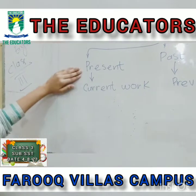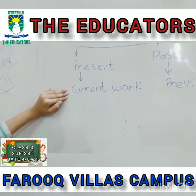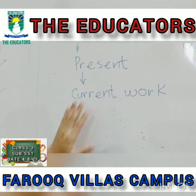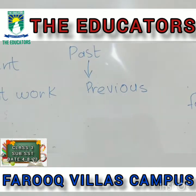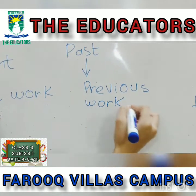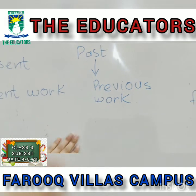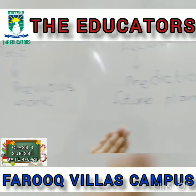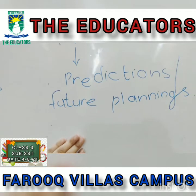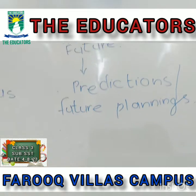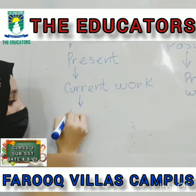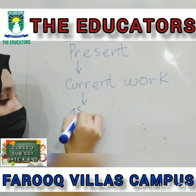In present tense we will discuss the current work — the current time, the time we are passing right now. In the past tense, about the previous work — the work that has passed or the time that has passed. In future tense we will discuss about the upcoming time, the upcoming days, or the work that we will do in the upcoming days.